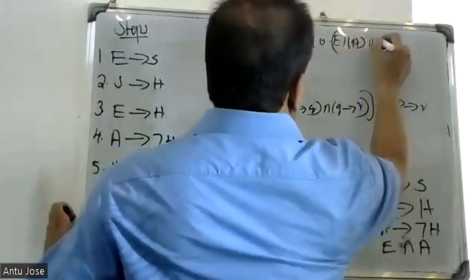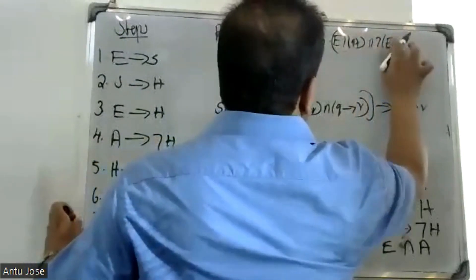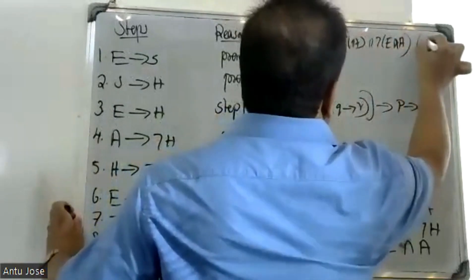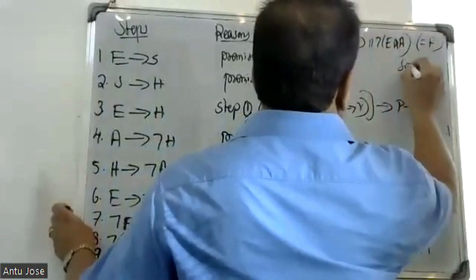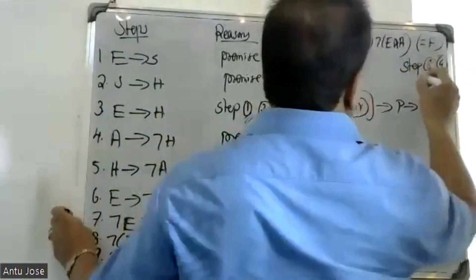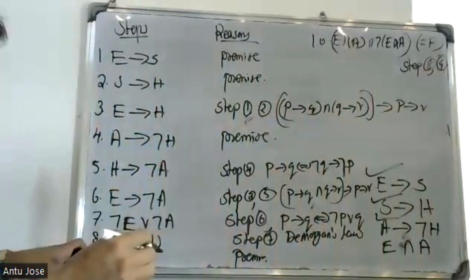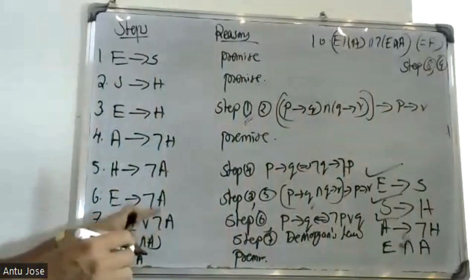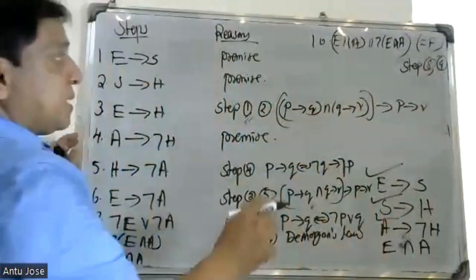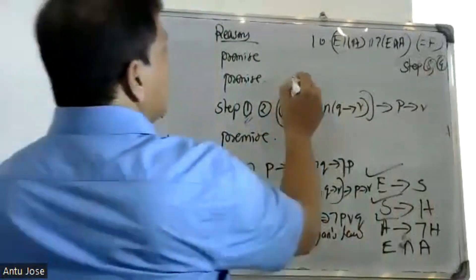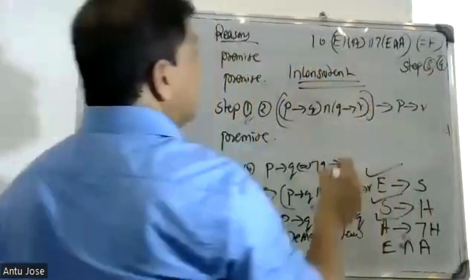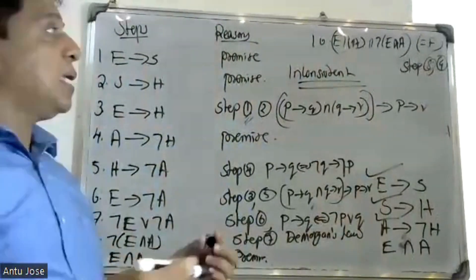And the negation — negation — and at the end of the steps, combining the negation results. Therefore, given premises are inconsistent.